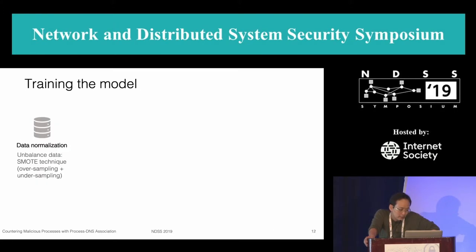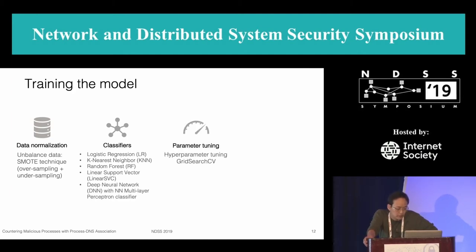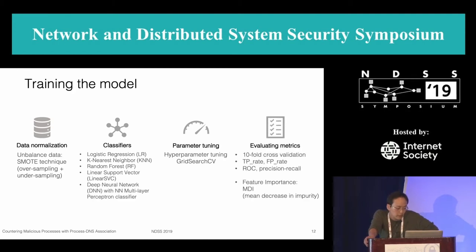For model training, our dataset is highly unbalanced. We employed standard techniques to address oversampling and undersampling. Once the data was normalized, we trained with different machine learning techniques. For hyperparameters, our approach implemented exhaustive grid search. Finally, we evaluated with tenfold cross-validation and measured true positive rate, false positive rate, and ROC for precision-recall. We also ranked the predictive power of each feature in terms of MDI.